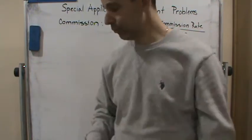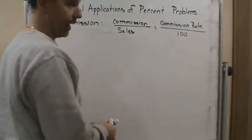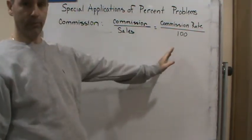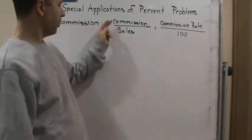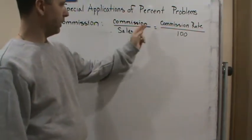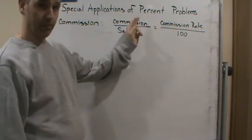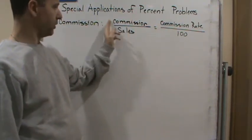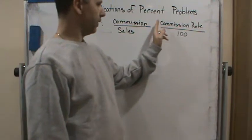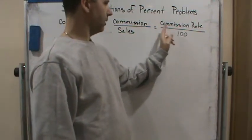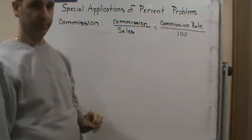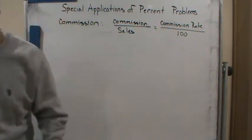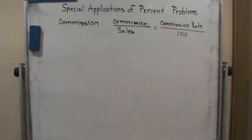The way we set it up — surprise — it's a proportion. Commission over sales equals the commission rate over 100. So commission is the amount of money you get paid based on the sales.